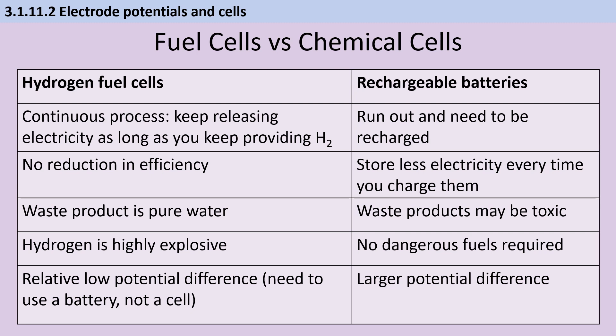Hydrogen is highly explosive, and this can make it difficult to store and transport. Fuel cells have a relatively low potential difference, and therefore it isn't feasible to use one single cell without making a battery.